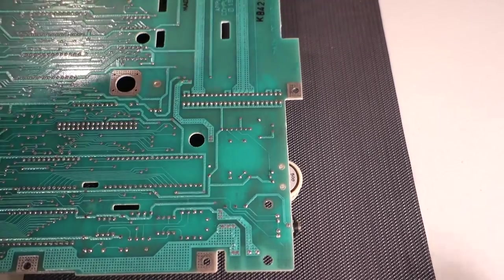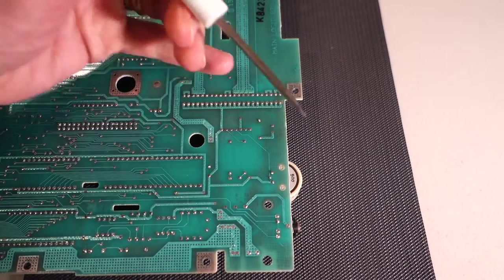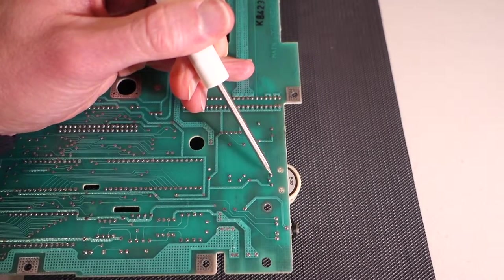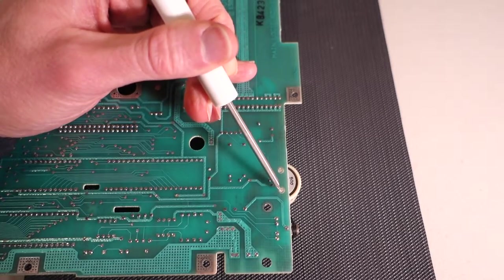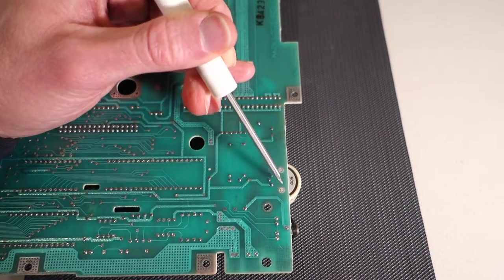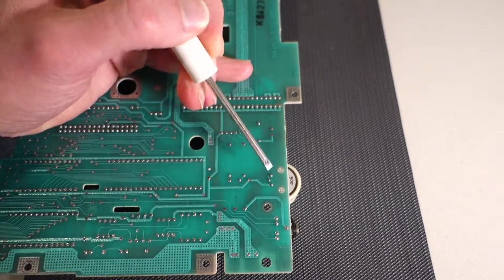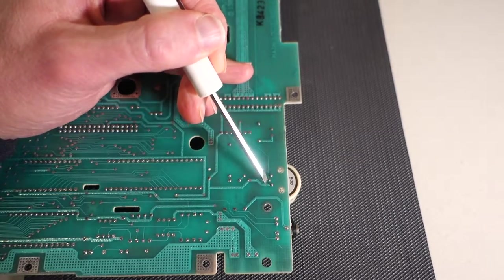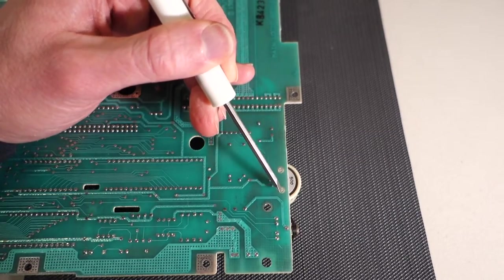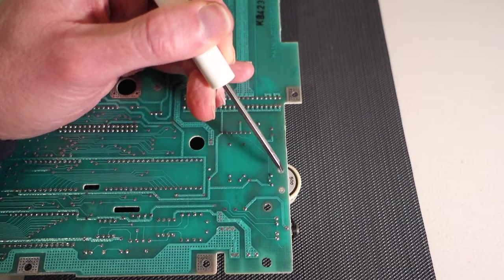If we flip it over we can see that there are three solder points here, here and here, and then two what appear to be plastic nubs that are shoved through the board. So we're going to try and unsolder these three points first and then see if we can push the knob out from the back here.